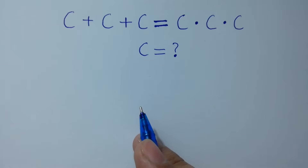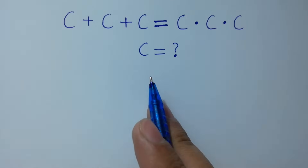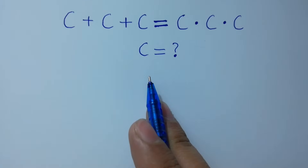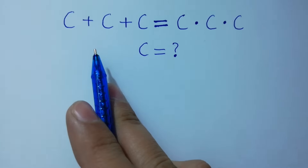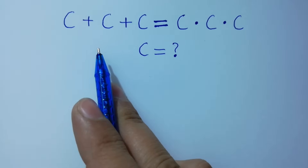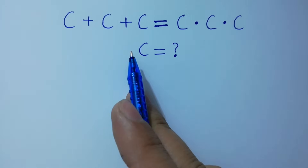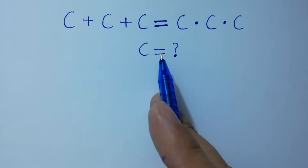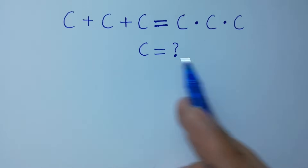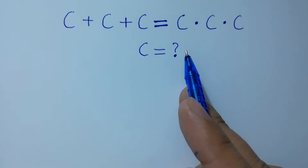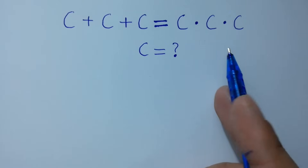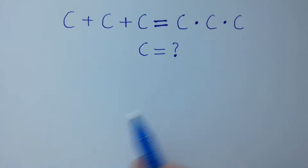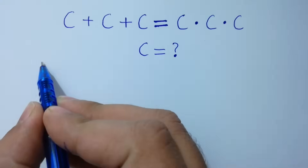Hello friends. Find the value of c if c plus c plus c is equal to c times c times c. Let's have a solution here.